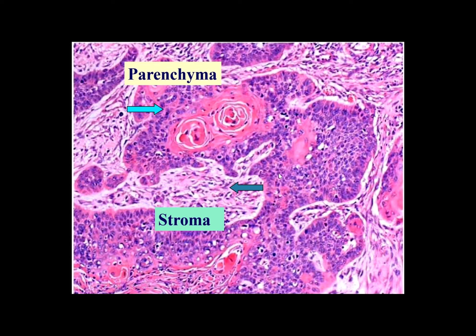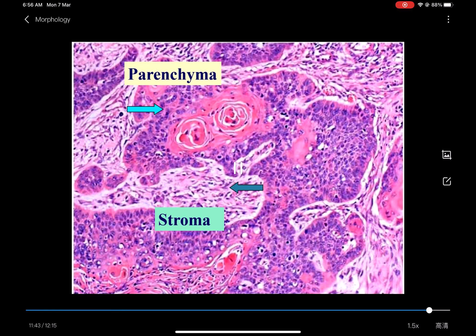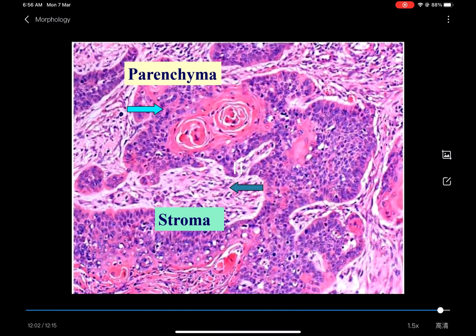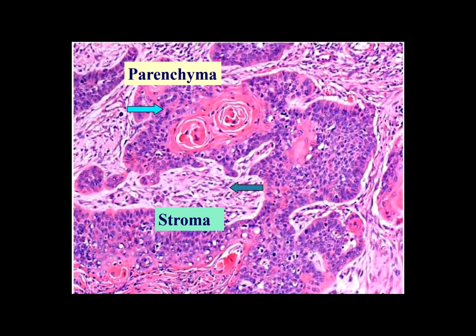So in this part, we learned morphologic changes — two parts. The first is gross appearance; the second is histologic changes. You need to master the components and the significance of the histologic changes.